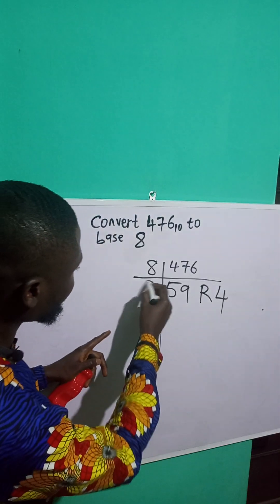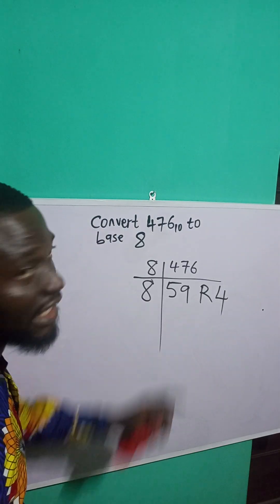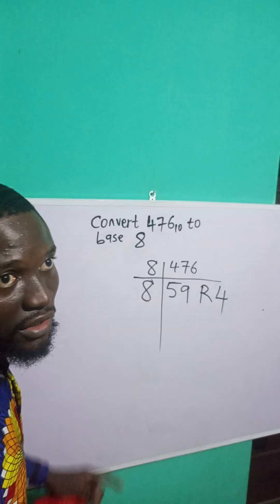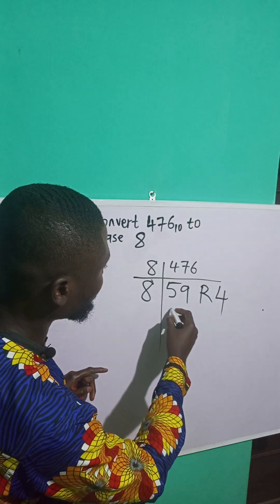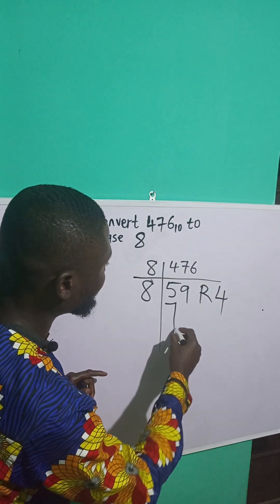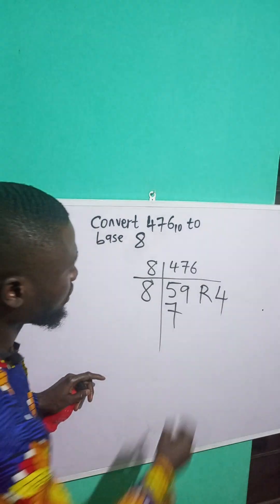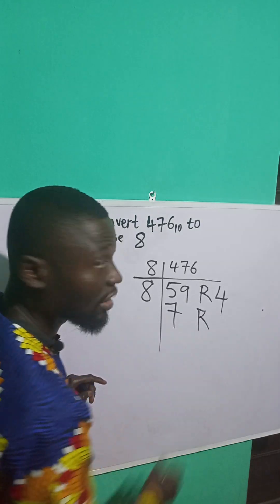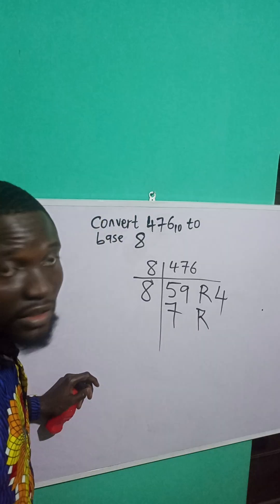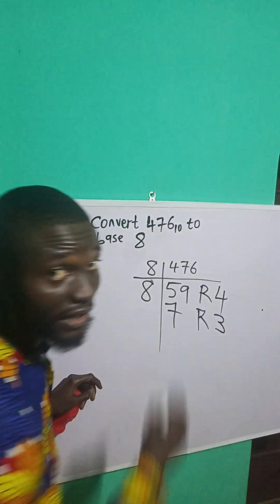Now, if 8 people share 59 oranges, they will get how many? They will get 7 each. And how many will remain? It will remain 3, right?